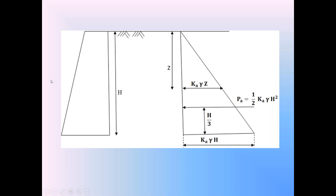In the active condition, the retaining wall is moving away from the backfill, and the backfill applies horizontal active earth pressure on the retaining wall. According to Rankine's theory, PA equals Ka times gamma times Z. At the top of the backfill, Z equals 0 so PA equals 0. Since the pressure depends only on Z linearly, the distribution is a linear distribution.